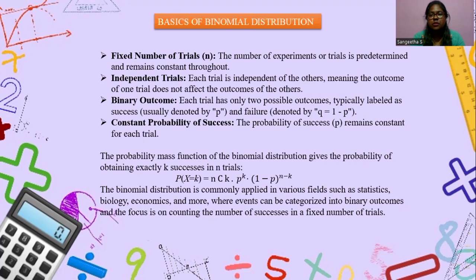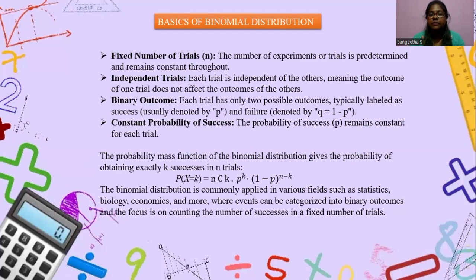Basics of binomial distribution. First, fixed number of trials: the number of experiments or trials is predetermined and remains constant throughout. Second, independent trials: each trial is independent of the others, meaning the outcome of one trial does not affect the outcome of the others. For example, if the first trial results in heads and the second trial also results in heads, there is no effect on getting different outcomes in each trial.